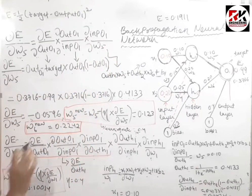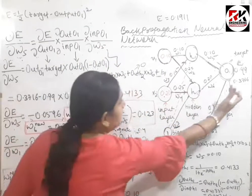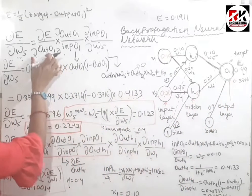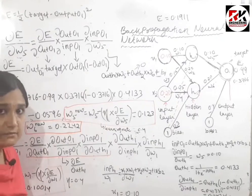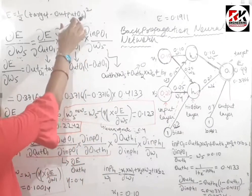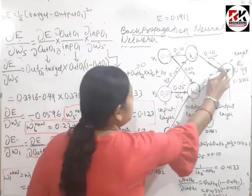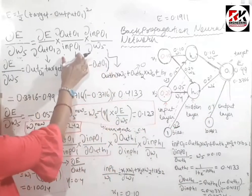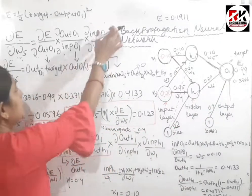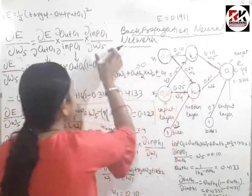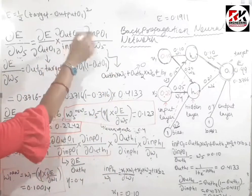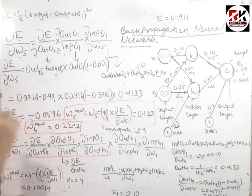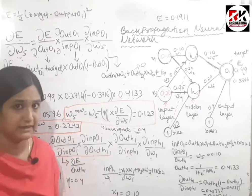The sequence is: error, then output of o1 — so we divide by output of o1 and multiply by it as per the chain rule. Next is input of o1 — divide by input of o1 and multiply. Finally we reach w5, so divide by w5. When we cancel terms out, we get error with respect to w5. This is the trick of expansion.